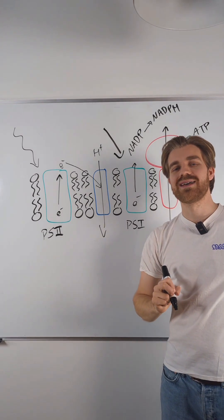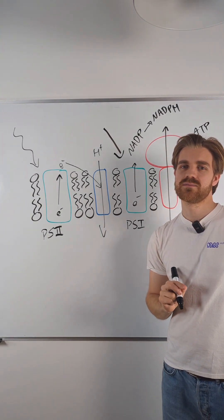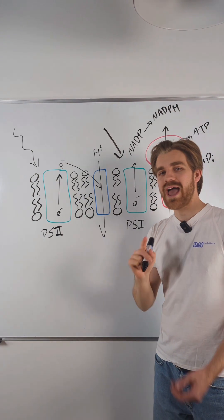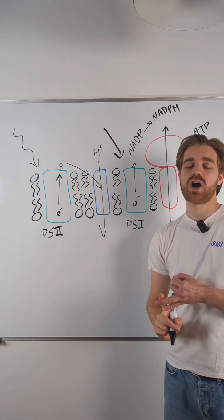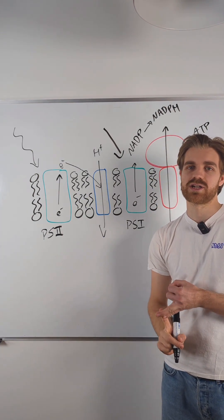This process is known as chemiosmosis. So there you have it. Now you know how ATP and NADPH are produced in the light dependent reaction.